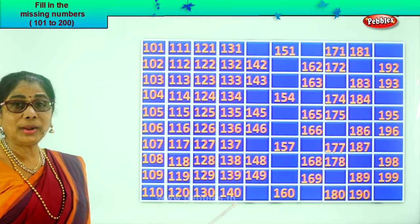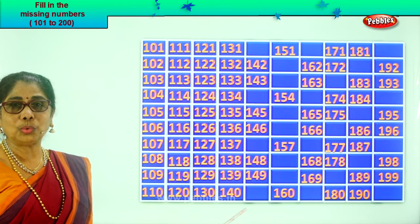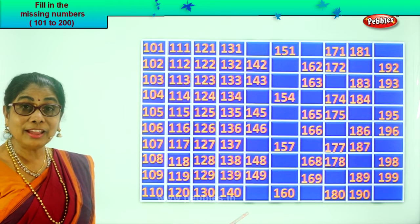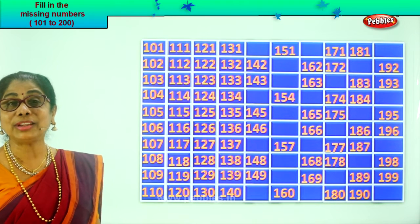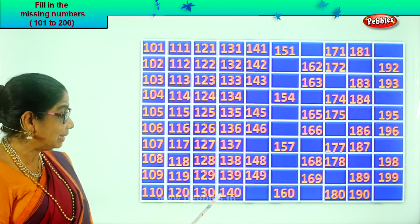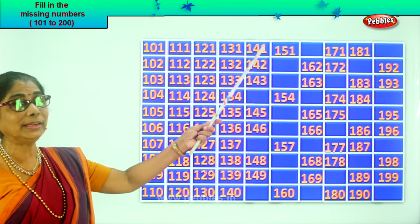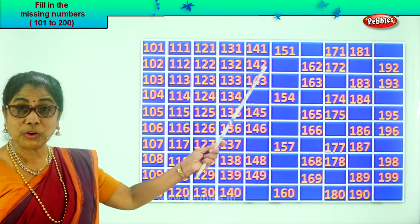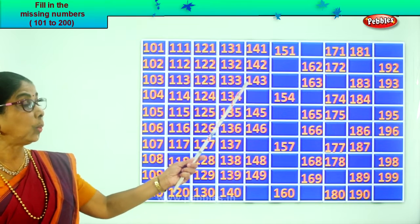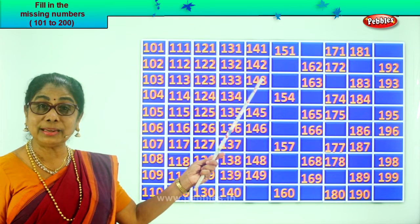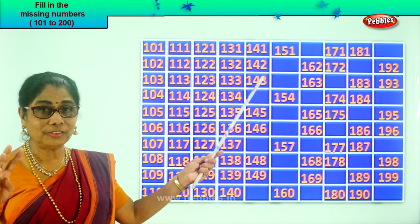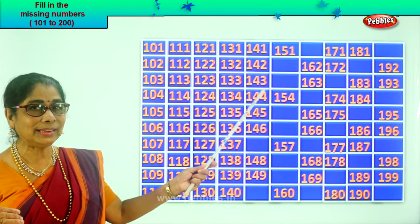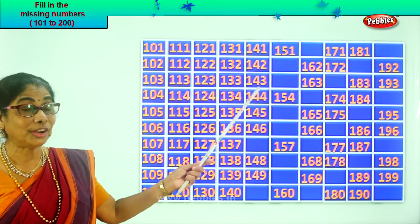After 140, after 0, what will be the next number? 1. After 40, 41. So we write it as 141. Next, 142, 143. After 3, 4. After 43, 44. So we write it as 144.